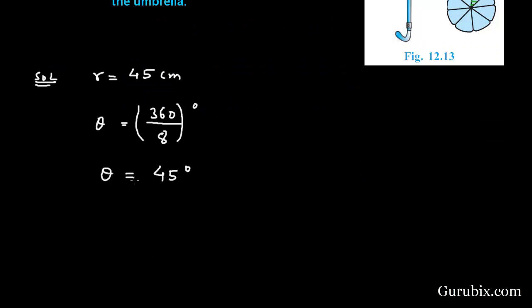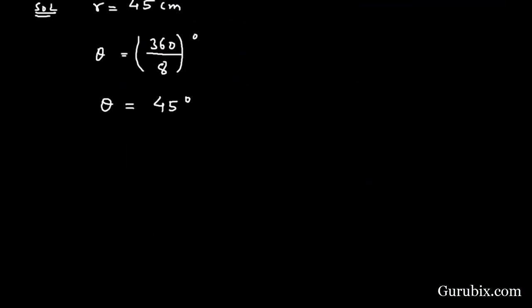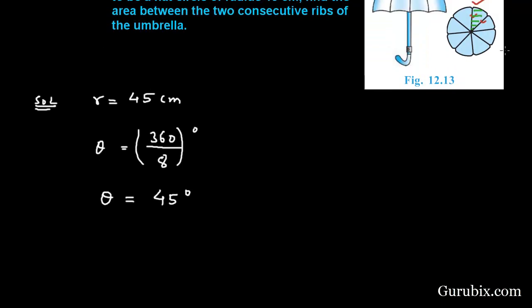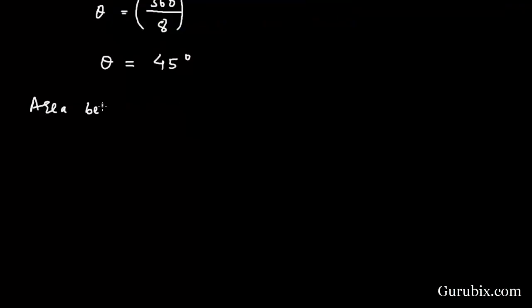Now we can find the area of the sector. Area between two consecutive ribs will equal theta over 360 degrees times pi r square. Theta is given as 45 degrees over 360 degrees...